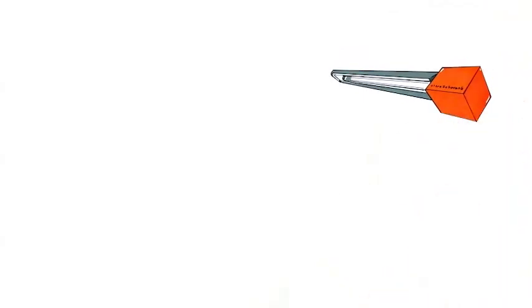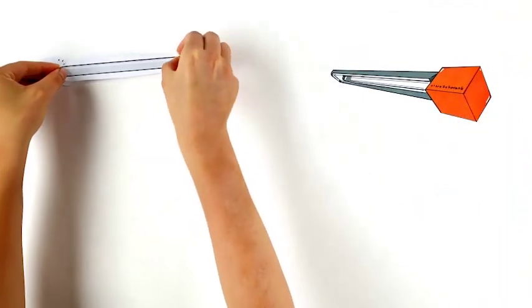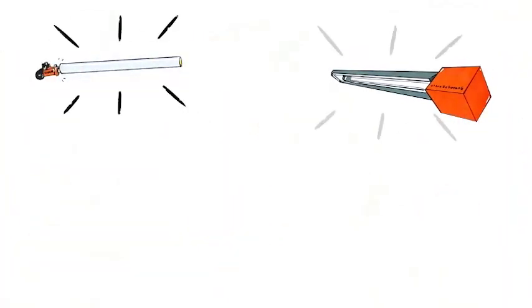With tube heaters, the combustion takes place in a tube. The tube then emits the radiation. Tube heaters work at lower temperatures and can heat from up to 35 feet high.